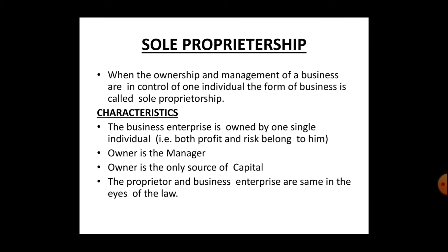Examples of enterprises run by a single owner include a printing press, auto repair shop, woodworking plant, small fabrication shop, retail traders, service industries, small engineering firm, etc. There are some key characteristics: there is a one-man effort, which is why it is called individual ownership.